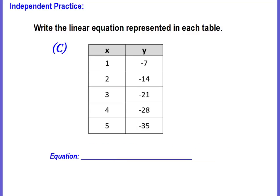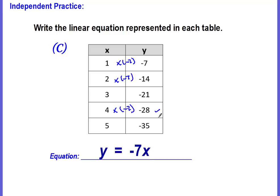Our last example — pause, find the equation, come back and check. Did you get y equals negative 7x? Let's verify: 1 times negative 7 is negative 7, 2 times negative 7 is negative 14 (positive times negative is negative), and 4 times negative 7 is negative 28. All correct. Nice job, Bobcats!